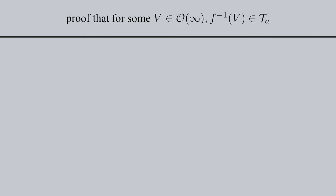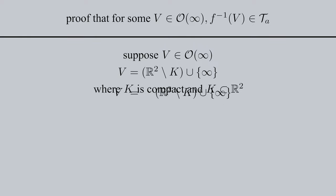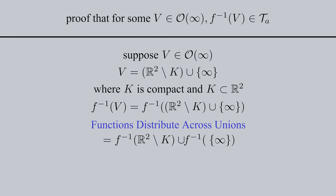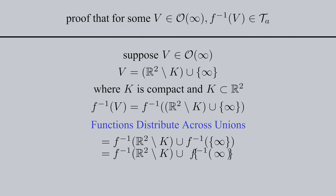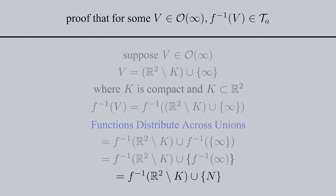The second case is a bit trickier. We need to show that some arbitrary open subset of our plane that contains the point at infinity has a preimage equal to an open subset of our sphere. This is how we'll prove continuity at the north pole. So let's now begin with the proof that for some V element of O of infinity, the preimage of V is an element of tau A. Suppose that V is an element of O of infinity. This means that V equals the complement of some K in R2 unified with singleton point at infinity, where K is compact and K is a proper subset of R2. We can then apply F inverse to both sides of this equation. From set theory, it can be proven that functions distribute across unions. Therefore, we can split up our preimage into F inverse of the complement of K in R2 unified with F inverse of singleton point at infinity. F inverse of singleton point at infinity is the same as singleton F inverse of the point at infinity. By definition, F inverse of point at infinity is just the north pole N.